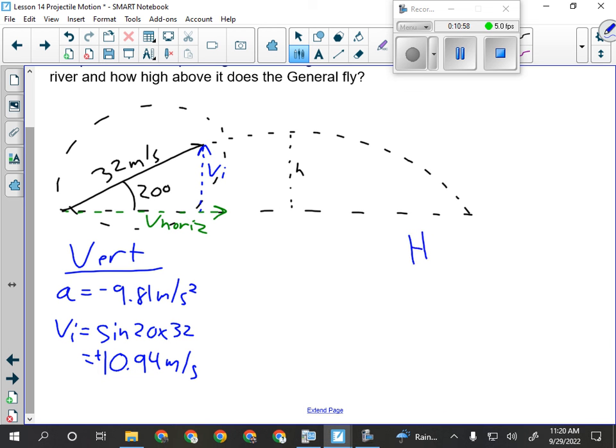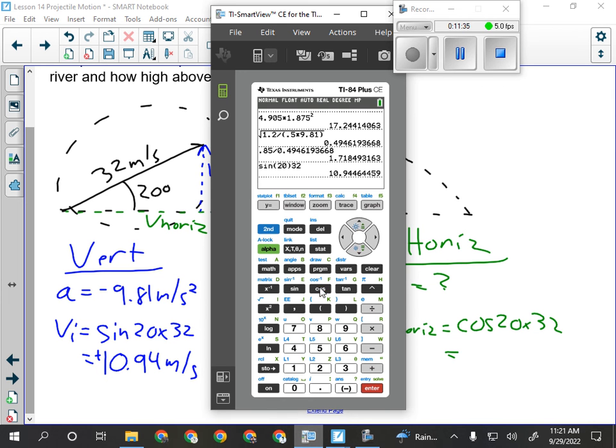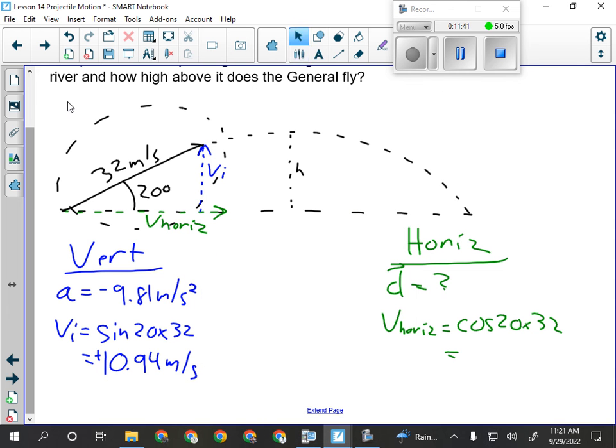I'm going to put some horizontal information on here as well. I know I want to find the horizontal displacement. I have no way to calculate that right now. But I can calculate. Since this is the x component, I'm just going to go cos of 20 times 32 to get my constant horizontal velocity for this question. So, cos of 20 times 32, 30.07 meters per second.